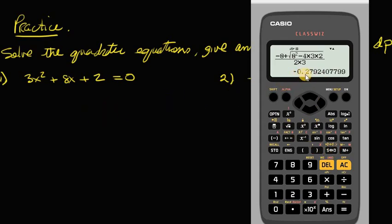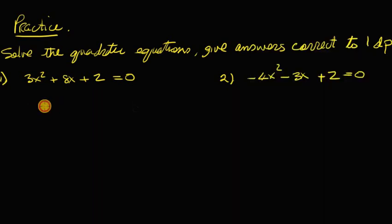So that's going to give me, to one decimal place, minus 0.3. So x is equal to minus 0.3.